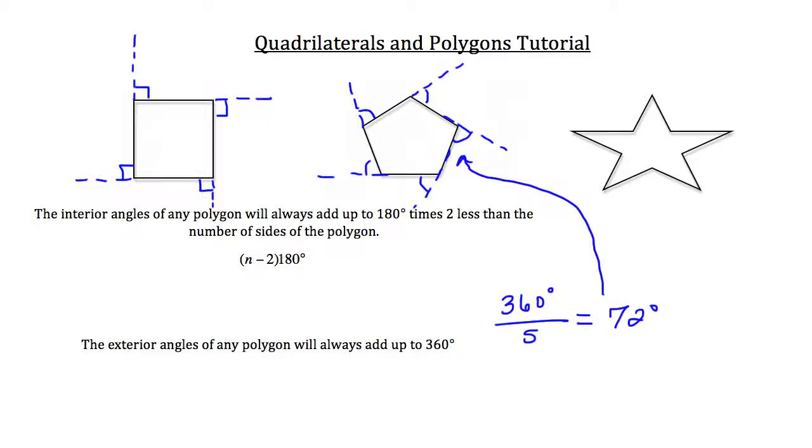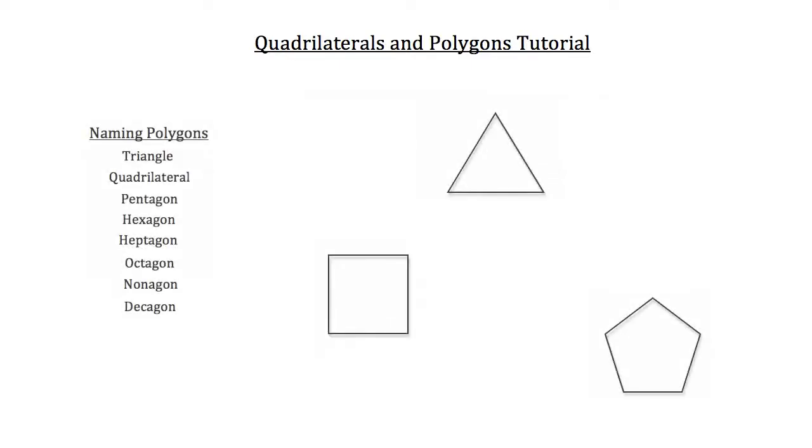Now the last thing I'd like to talk to you about is how to name polygons. You already know how to name some common polygons. For example, and we'll go in order of the number of sides that they have. A triangle is a polygon that has three sides. A quadrilateral is a polygon that has four.